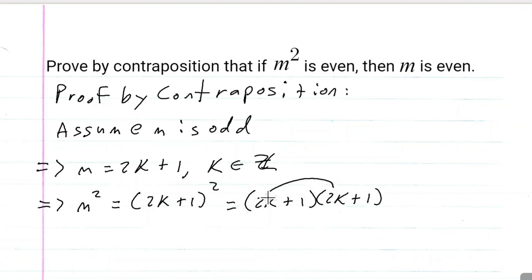2k times 2k is 4k squared. So we can rewrite this: m squared equals 4k squared because 2k times 2k is 4k squared. 2k times 1 is 2k. And then plus 1 times 2k would be 2k.